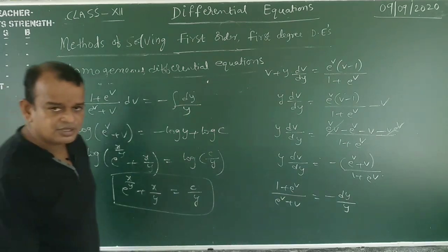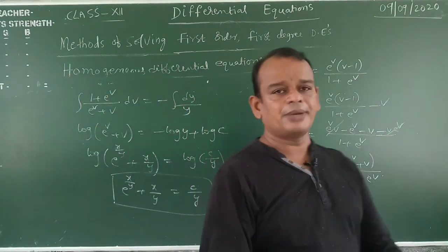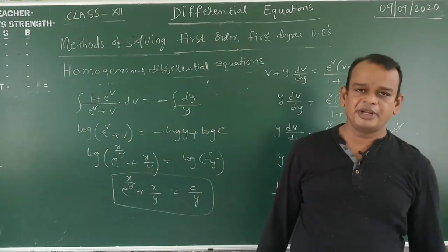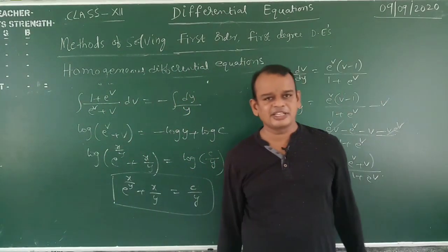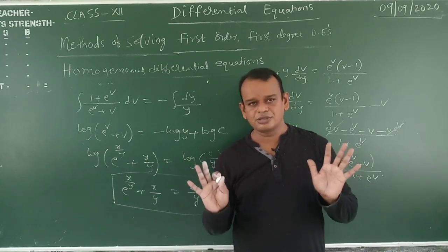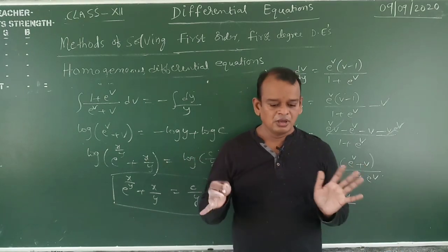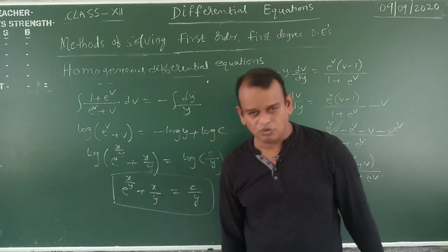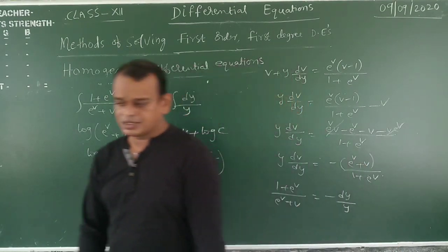Now: y·(dv/dy) = eᵛ(v − 1)/(1 + eᵛ) − v = (−eᵛ − v)/(1 + eᵛ). Separating: (1 + eᵛ)/(eᵛ + v) dv = −dy/y. Integrating: since derivative of (eᵛ + v) is (eᵛ + 1), this is f'(x)/f(x) form, so log(eᵛ + v) = −log y + log c. Substituting v = x/y: log(eˣ/ʸ + x/y) = log(c/y). Removing logarithms: eˣ/ʸ + x/y = c/y. This is the solution. In this way we do both dy/dx type and dx/dy type problems. Thank you.